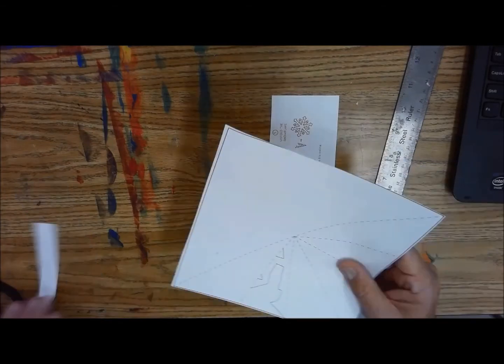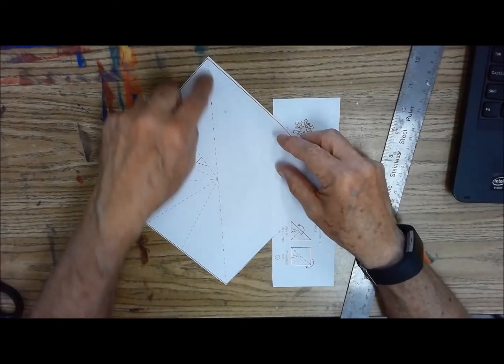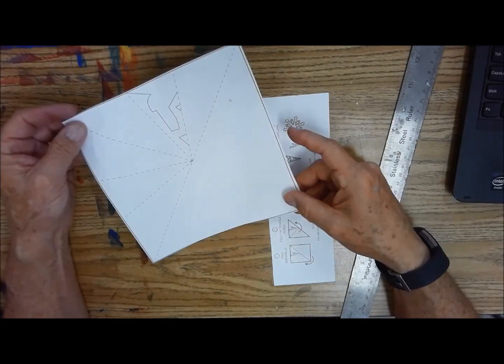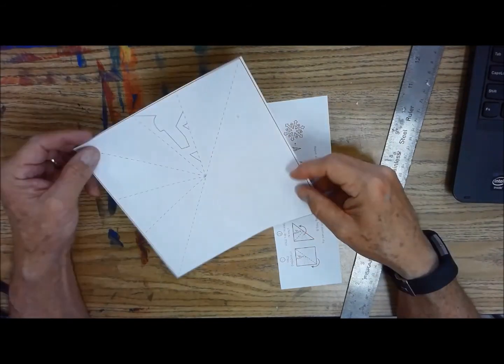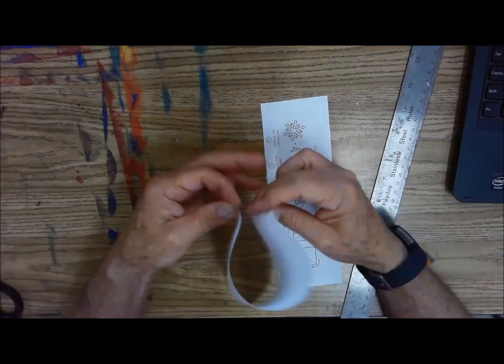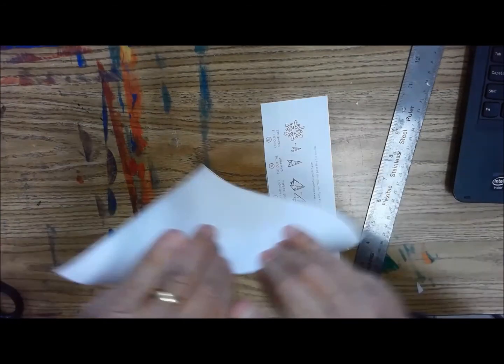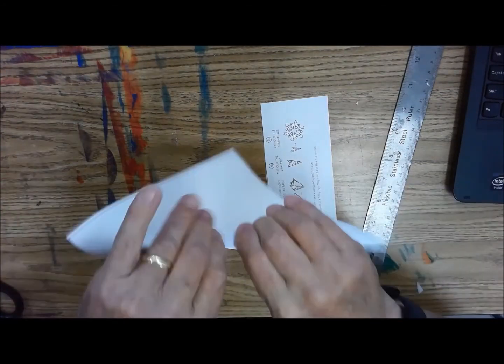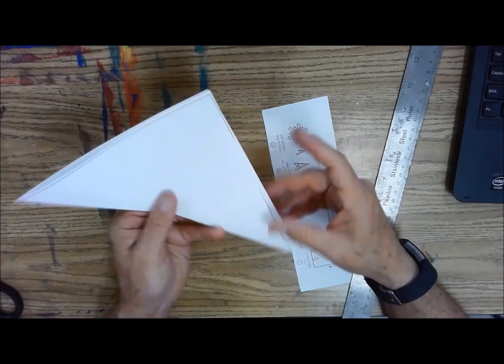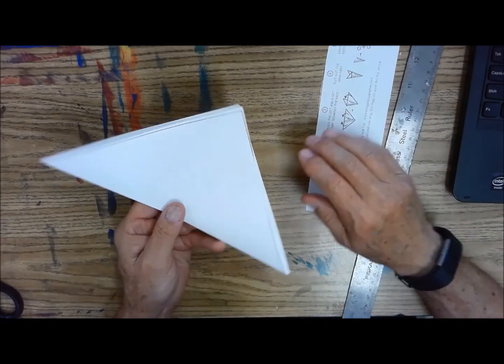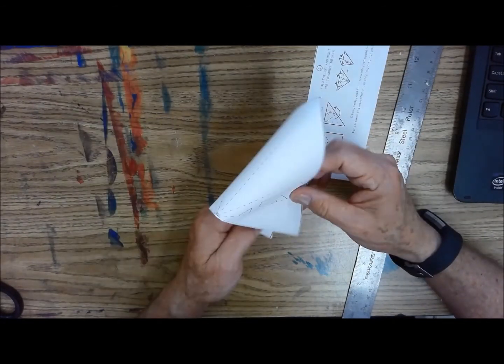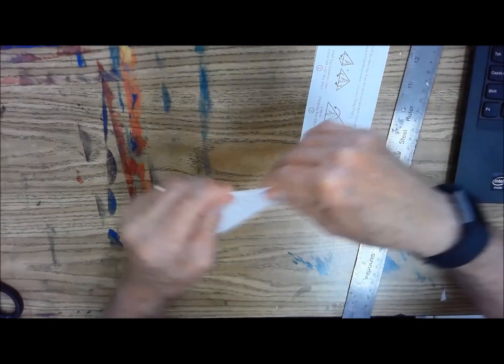So we're going to go ahead and fold this up. Notice there's a long diagonal fold or long diagonal line right there and we're going to fold it on that. Fold this in half and make it a triangle. One side of the triangle should have all the design on the other side should be blank. They're going to fold it in half again so we get the design on each side.